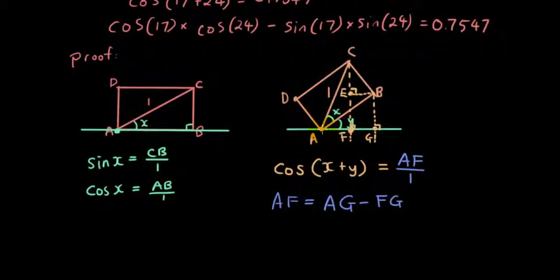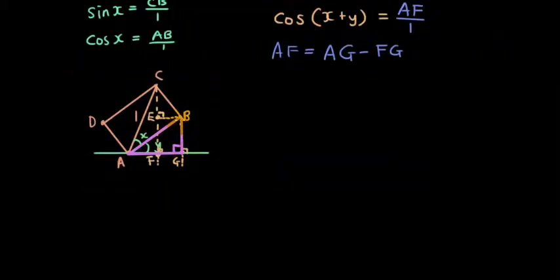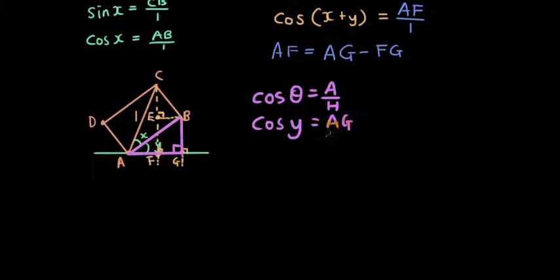So what is an expression for AG? Well, if you look at this big triangle here, this right angle triangle here, we've got cos theta. So in this right angle triangle here, I've highlighted in pink, we have cos theta equals adjacent over hypotenuse, which is cos y equals adjacent, which is AG, over the hypotenuse, which is AB. So cos y equals AG over AB.